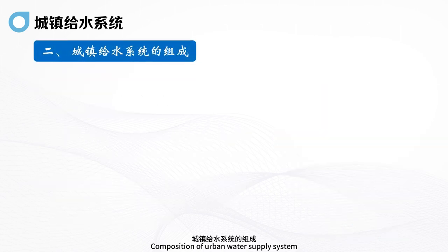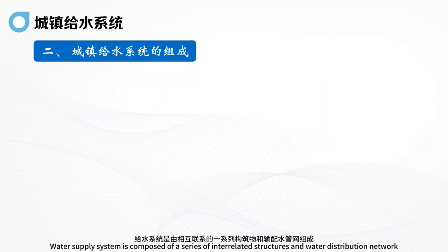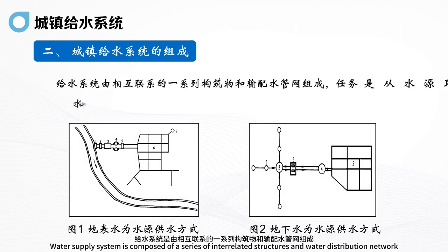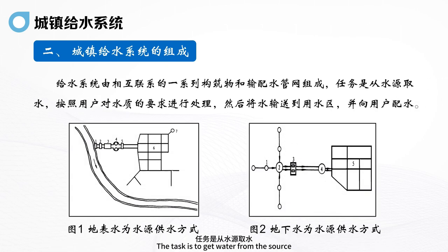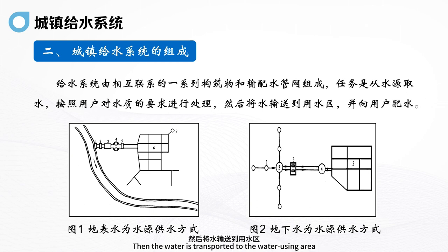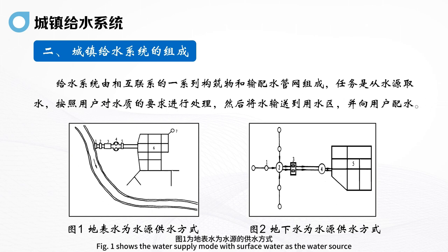The composition of the Urban Water Supply System: the water supply system is composed of a series of interrelated structures and water distribution networks. The task is to get water from the source, treat it according to the user's requirements for water quality, then transport it to the water-using area and distribute water to users. Figure 1 shows the water supply mode with surface water as the source; Figure 2 shows the mode with groundwater as the source.